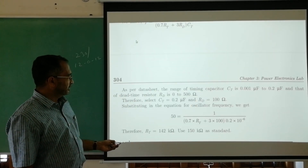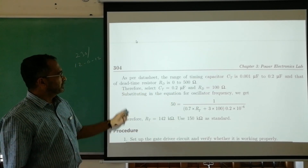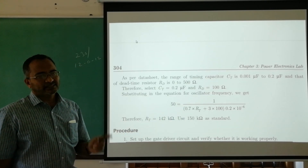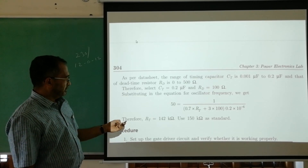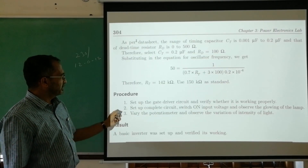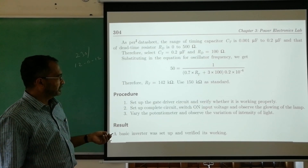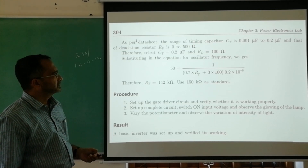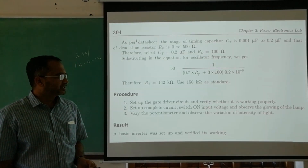We select Rt as 100 ohms and, putting it into the equation with Ct of 0.2 microfarads, we get approximately 142. So we select a standard value for the resistor of 150 kilohms. The procedure for the circuit is very simple: set up the circuit and connect it, switch on the entire circuit, and we will find the lamp glowing. That is the working of the circuit.